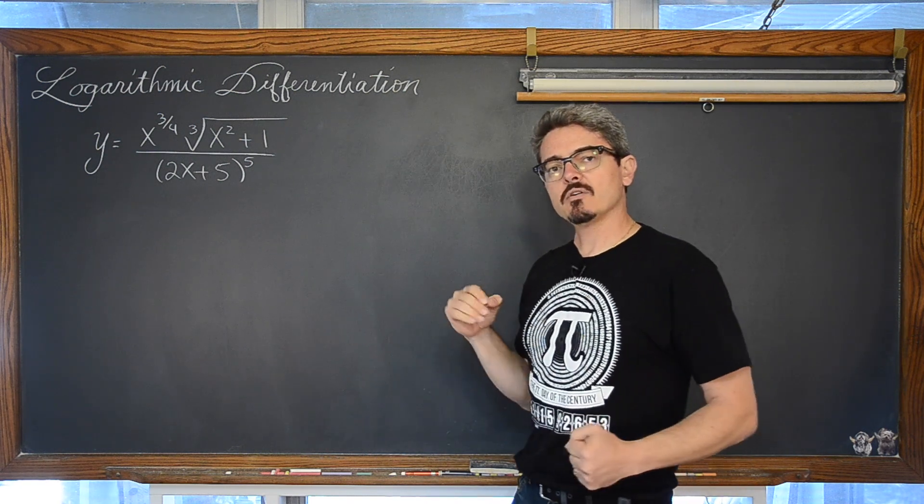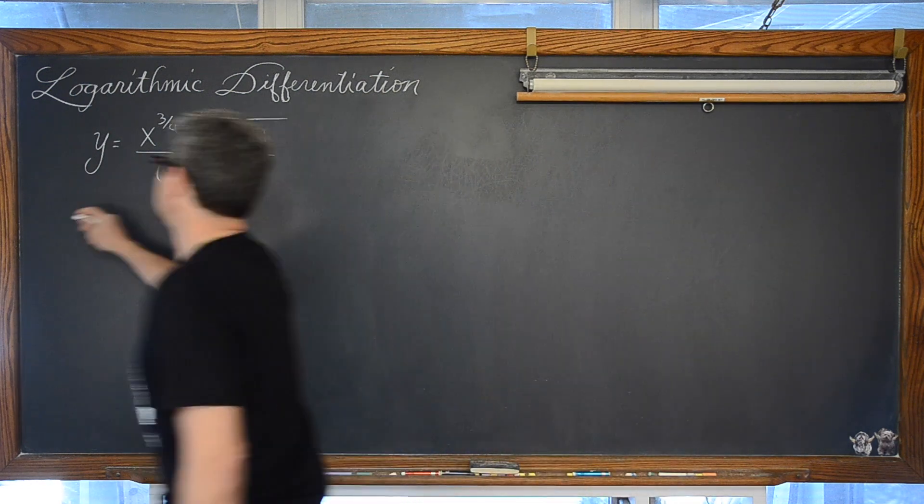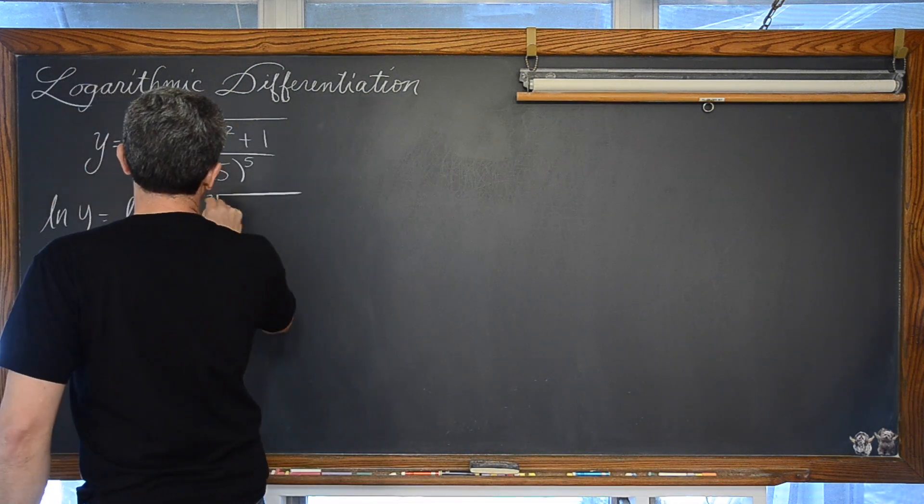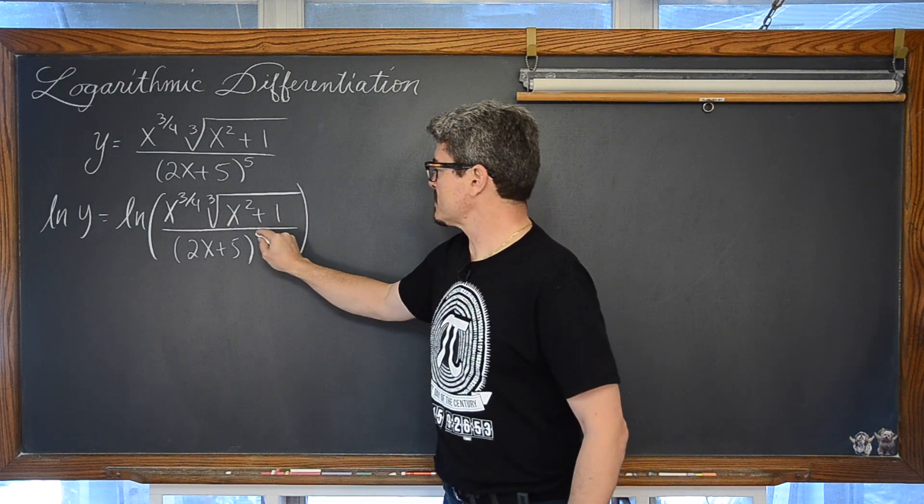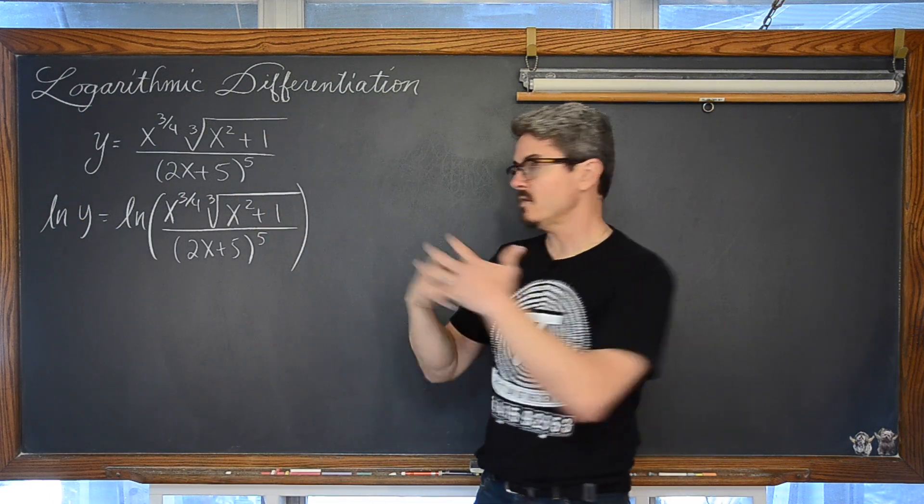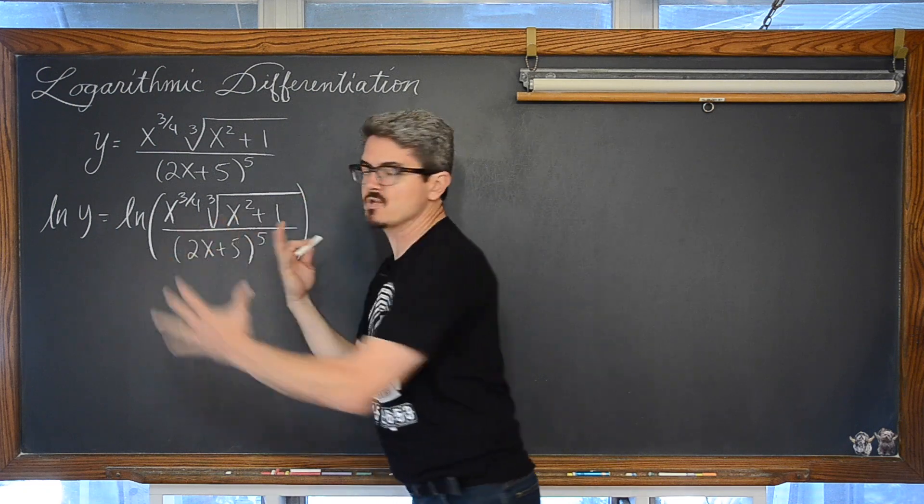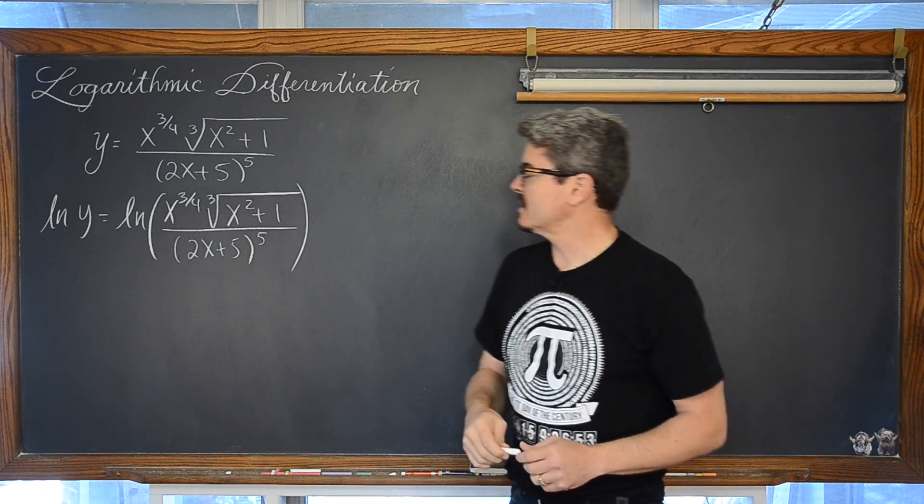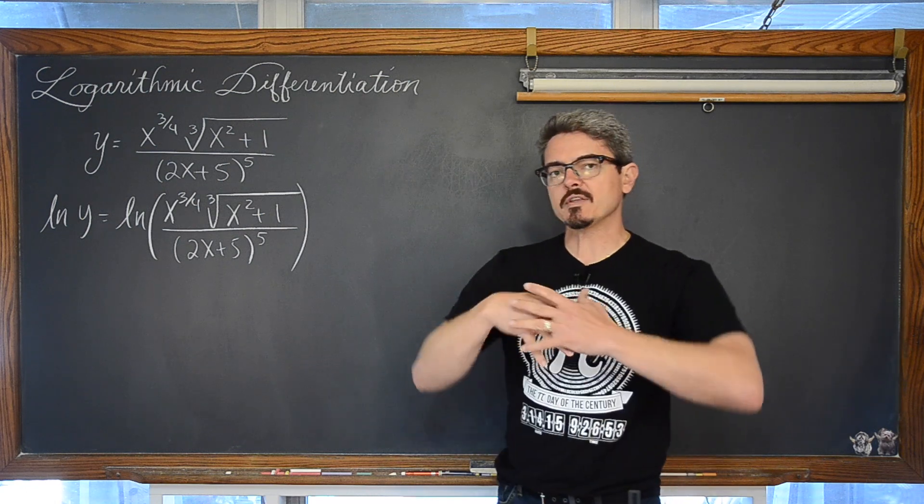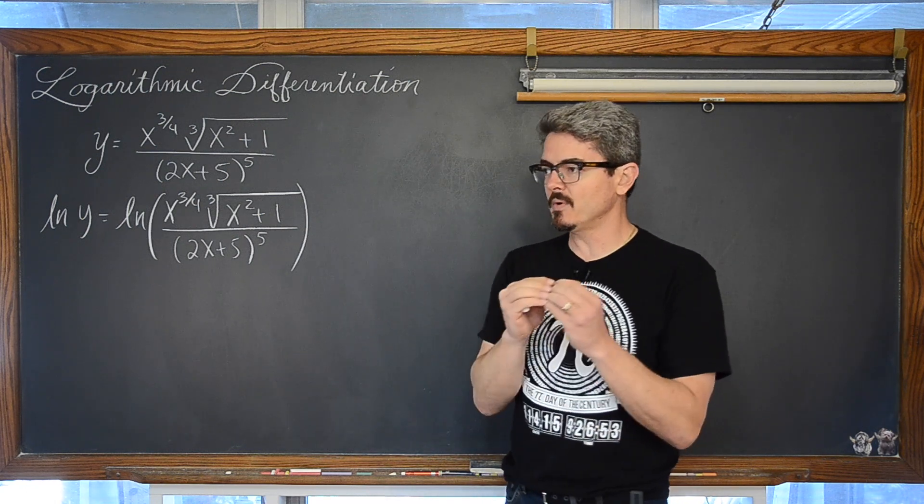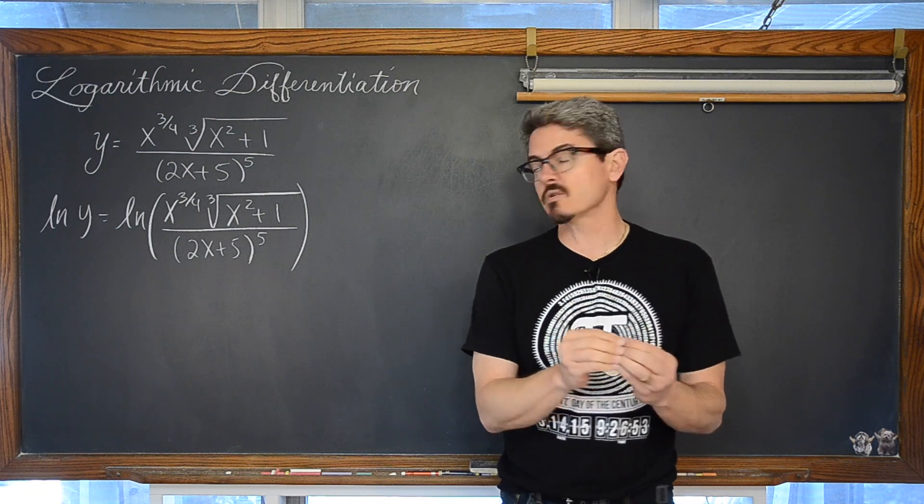Step one, we are going to take the natural log of both sides of this equation. And what that is going to allow us to do is on the right hand side where we have all this multiplication and division going on, that power of 1/3 around the x squared plus 1, we are going to be able to expand all of this into separate natural log terms.